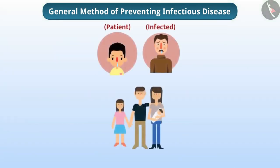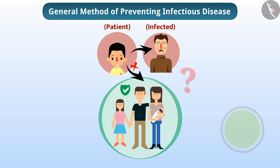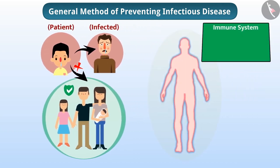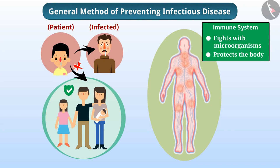You might have noticed that if one member of a family has a cold, other family members may also get a cold. But in fact, not all members get a cold. Our body has an immune system which fights with microorganisms and protects the body. As soon as a microorganism enters our body, some cells become active. They kill the microorganisms so that we do not get a disease. Immune cells kill the disease-causing microorganisms before the infection spreads.